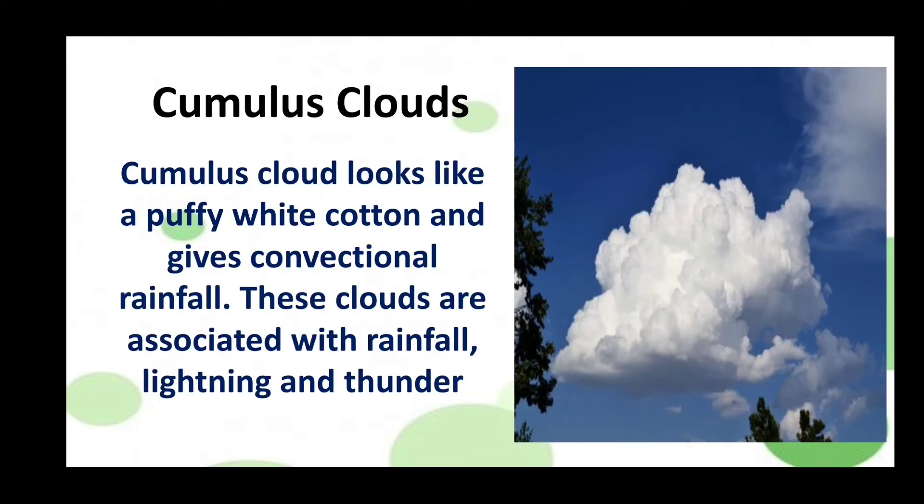The next one is cumulus clouds. Cumulus clouds look like puffy white cotton and give convectional rainfall. These cumulus clouds are associated with rainfall, lightning, and thunder.